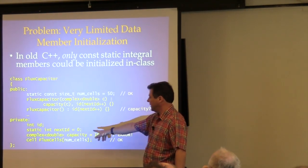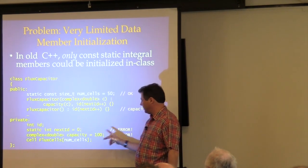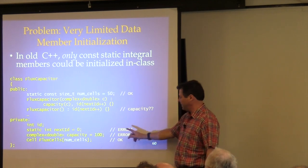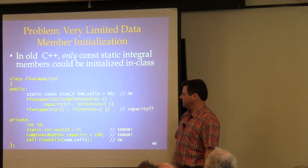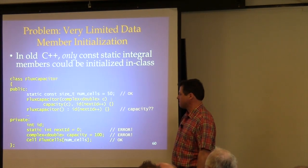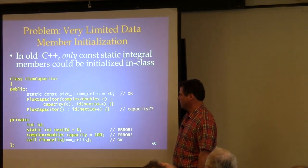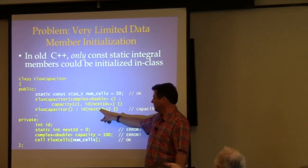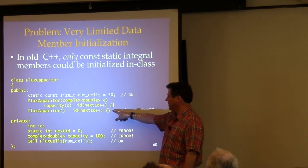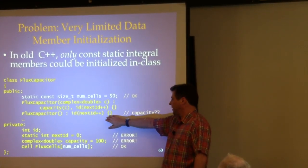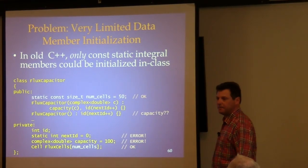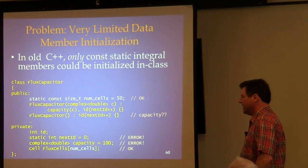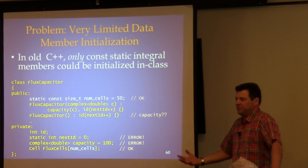If you try to initialize a static variable that isn't const, it's an error. If you try to initialize an ordinary non-static data member, it's an error. And here's another case of forgetting to initialize capacity — with old C++, you have an undefined value for capacity. It's very limited. That's just the way C++ was.